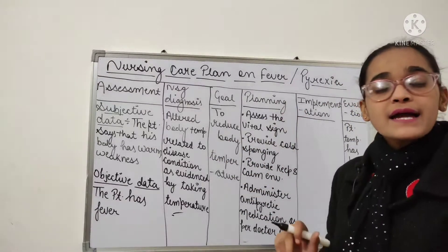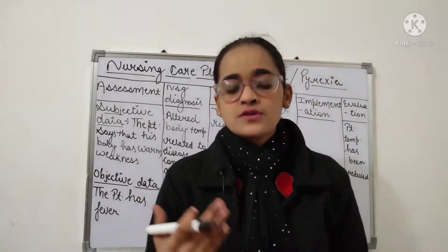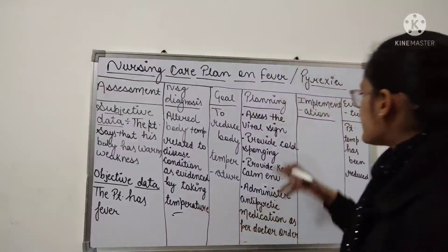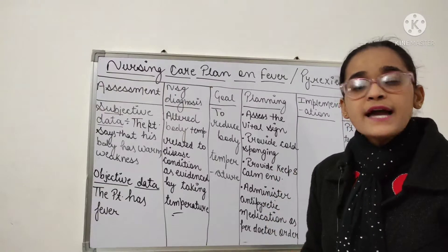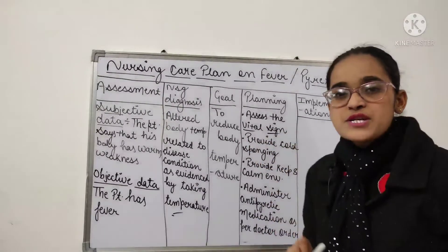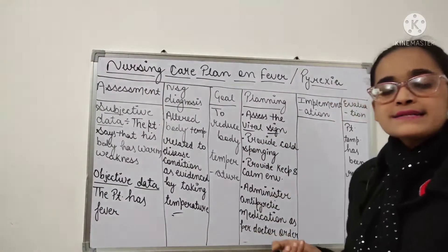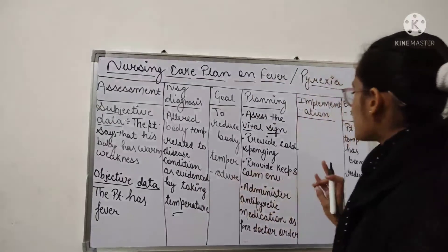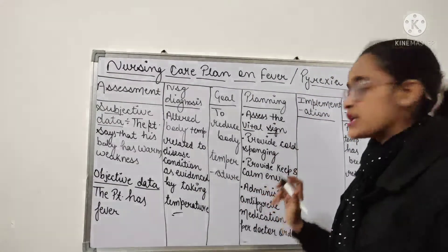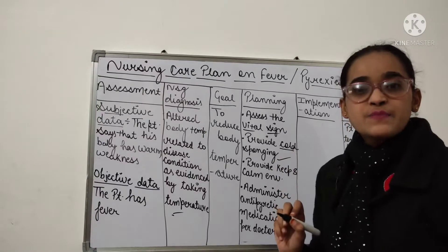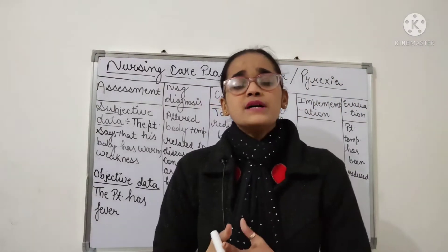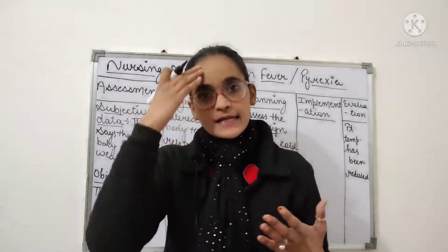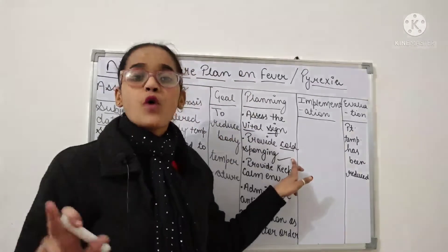Next, we have our planning — what we plan to reduce the fever. First, assess the vital signs: temperature, pulse, respiration, and blood pressure. Next, provide cold sponging. When we have fever, we keep cold water on our forehead — that is cold sponging.